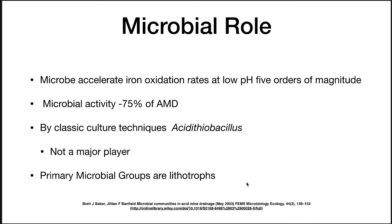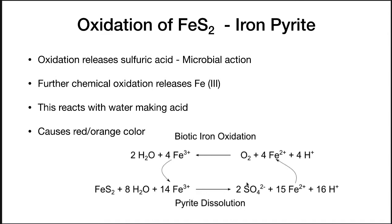Microbial activity was accountable for 75% of acid mine drainage. By classic culture techniques, it seemed like Acidithiobacillus was a major player, but after investigations using modern techniques, it turned out not to be a major player. It was found that the primary microbial groups are lithotrophs, and they were oxidizing iron sulfide or iron pyrite — also known as fool's gold. This oxidation releases sulfuric acid by microbial action.